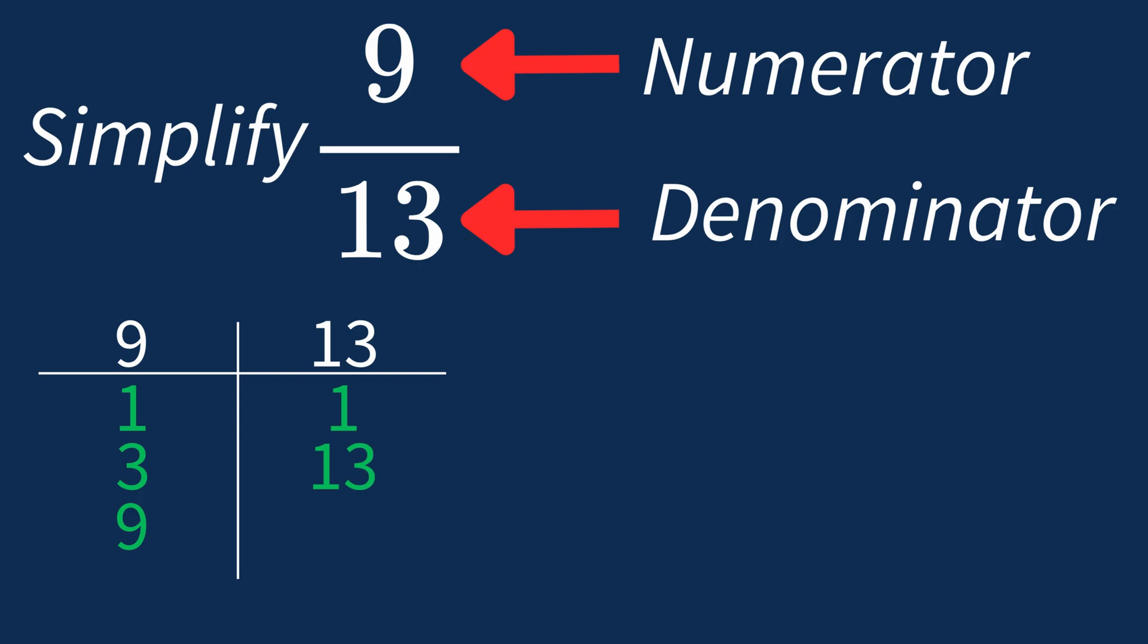So in this case, the largest common factor is 1. This means we'll divide both the numerator and denominator by 1 to see if anything changes.